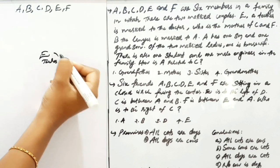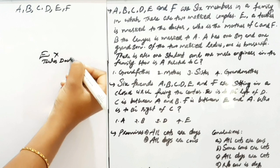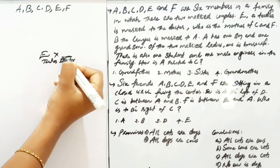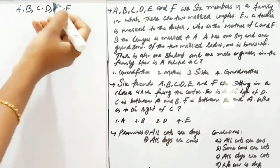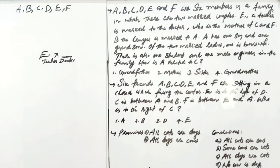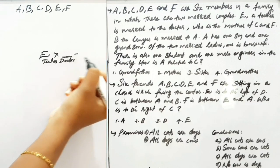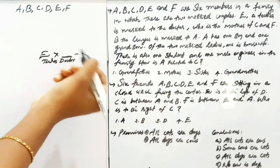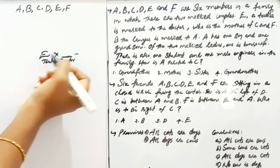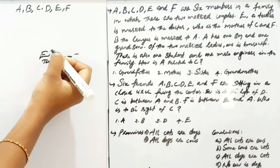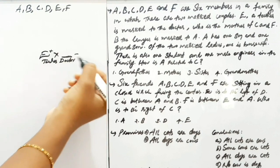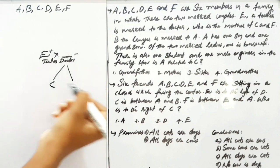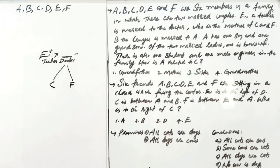So, the teacher is married to a doctor. The next statement: E, a teacher, is married to a doctor. Who is the mother of C and F? That doctor is the mother of C and F. So, the doctor is female. The doctor is the mother of C and F.